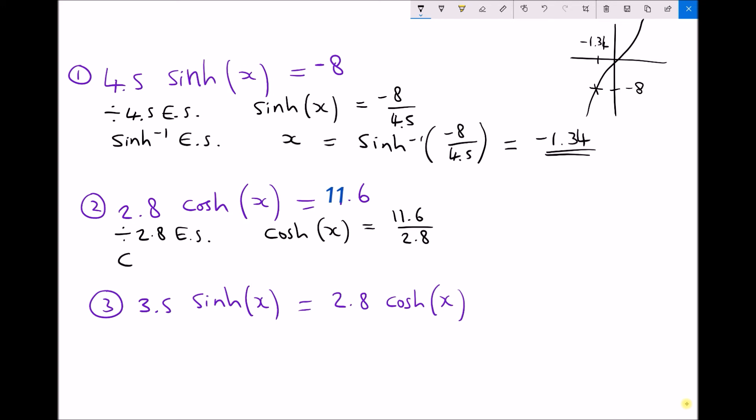However our next step in order to get x on its own is to take the inverse cosh or cosh to the minus 1. So we have cosh to the minus 1 each side. Now taking the inverse cosh of the left hand side just leaves us with x. And taking the inverse cosh of the right hand side gives us cosh to the minus 1 of 11.6 over 2.8. Now running that through the calculator gives us a value of x equal to 2.1 to one decimal place.